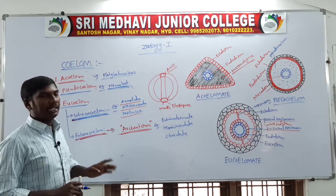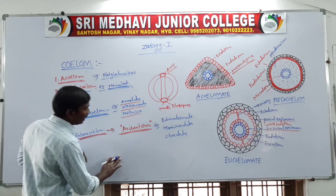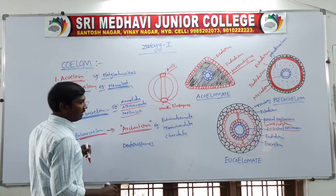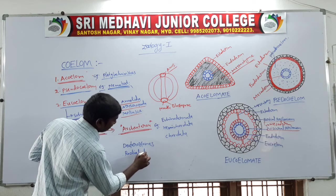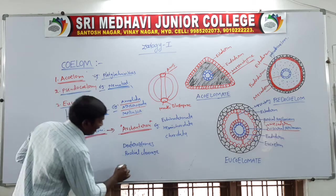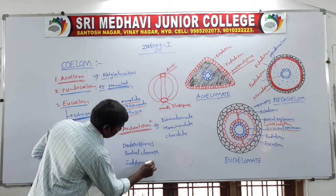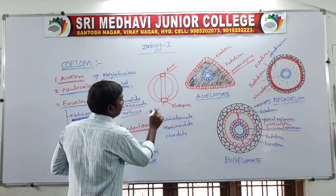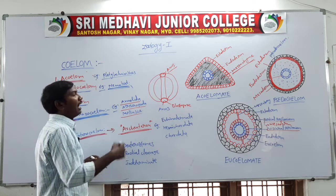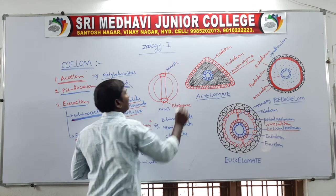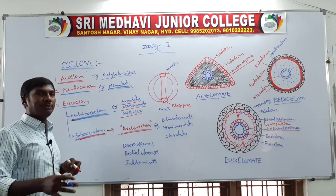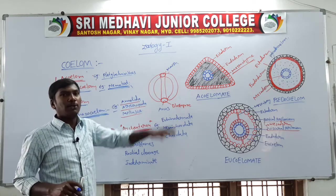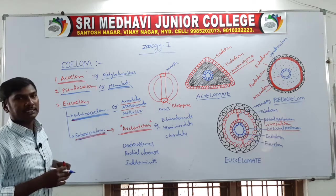These animals (Echinodermata, Hemichordata, Chordata) are called deuterostomes. The cleavage is called radial cleavage and indeterminate cleavage. Deuterostomes: in the embryonic stage, the blastopore forms the anus first, and the mouth is formed second. 'Deutero' means second, 'stoma' means mouth — second formation of the mouth.